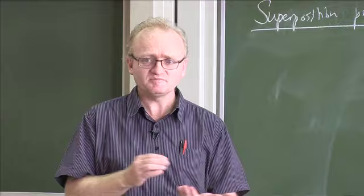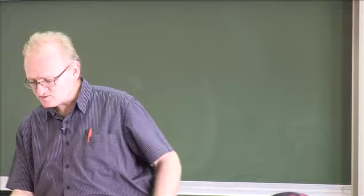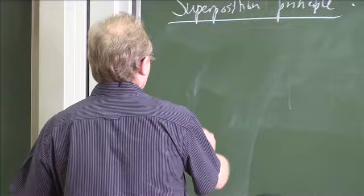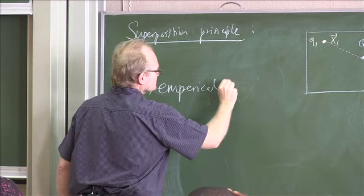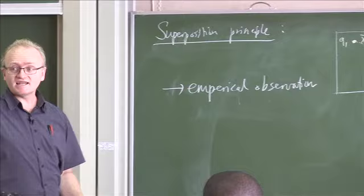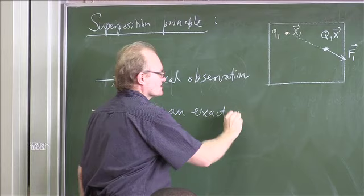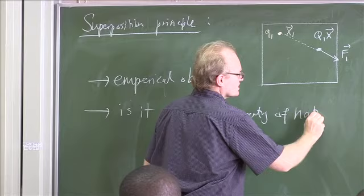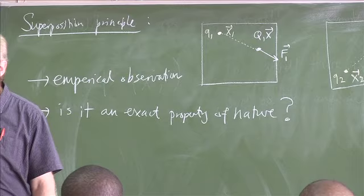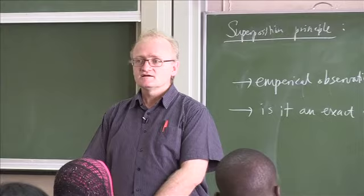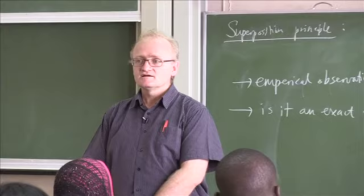The superposition principle is something that was observed in experiment. So it's something that people see when they go into the lab. Does anybody know? Is this an exact statement or is it just an approximation? So is this exact? It is an empirical observation. It was measured in the lab. And now the question that I want to ask is, is it an exact property of nature? So is it a property of nature, the superposition principle? Or is it actually just because we weren't measuring very accurately? Does anyone know the answer?